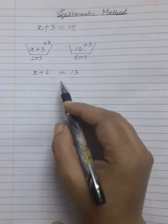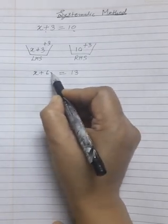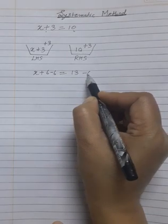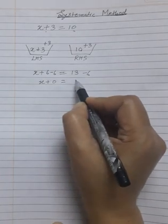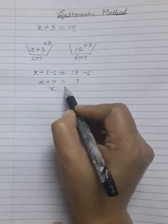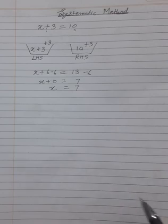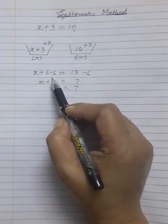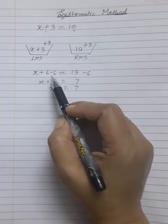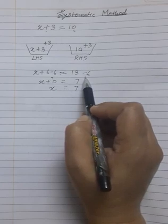Similarly, children, to keep this equation balanced, we may subtract some number. Suppose I subtract 6 from both sides: x plus 6 minus 6 gives x plus 0, and 13 minus 6 gives 7. This is also a balanced equation, or we can say x equals 7. The concept of balancing an equation is that if we add, subtract, multiply, or divide a number on the left hand side, we must do the same operation with the same number on the right hand side also.